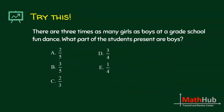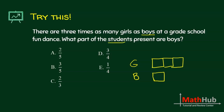Pause your video and try to answer this question. There are three times as many girls as boys. We represent the boys first because the girls is just three times that, or three boxes. The question is: what part of the students are boys? The denominator is the total number of students and the numerator is the boys, giving us 1 over 4.